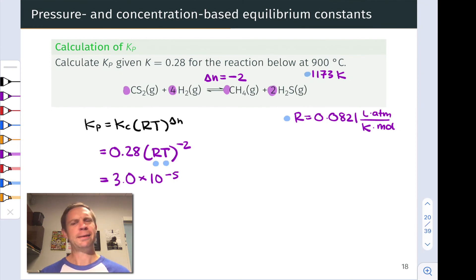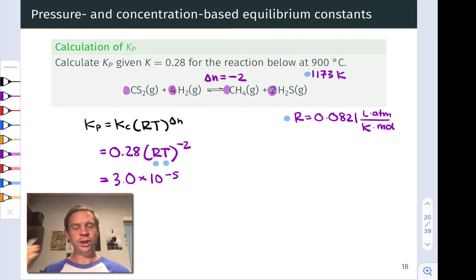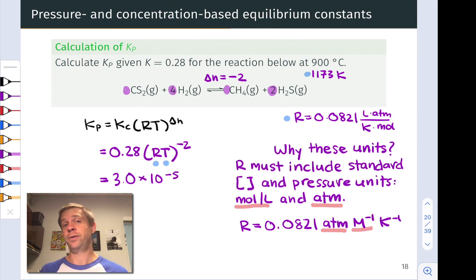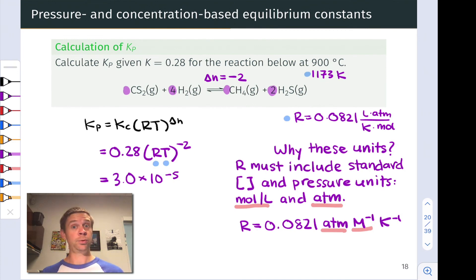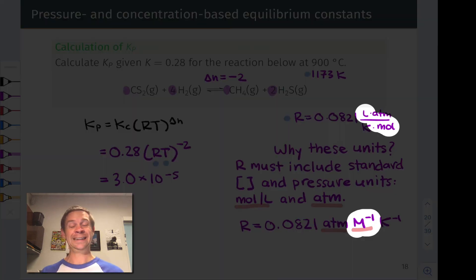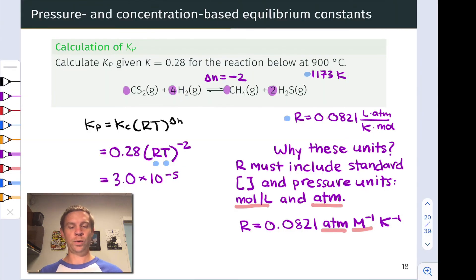Why do we use R = 0.0821 L·atm/(K·mol)? The units of R need to match the standard units of concentration and partial pressure used in reaction quotients: moles per liter for concentrations and atmospheres for partial pressures. Writing R in units of atm·L/(mol·K), we see it includes atmospheres directly, and liters per mole is the reciprocal of molarity. This is also why we must use temperature in Kelvin inside the RT expression.